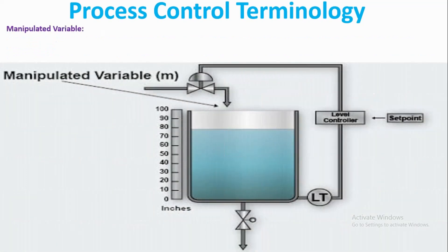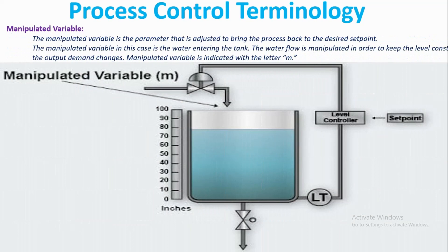At last, we will see what a manipulated variable is. The manipulated variable is the parameter that is adjusted to bring the process back to the desired set point.